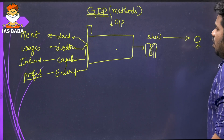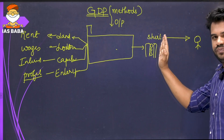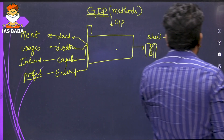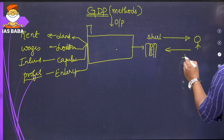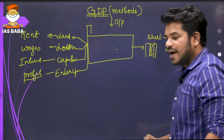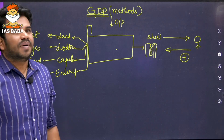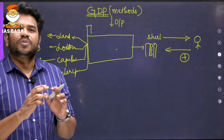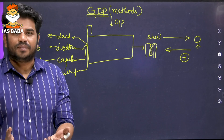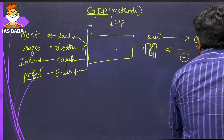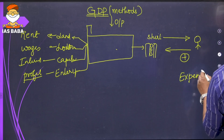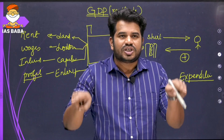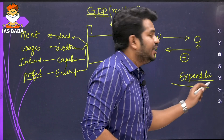We can calculate this output in three ways. One is by adding all the expenditure made by all the consumers. This consumer can be a government or a private person or a private firm. If I add the expenditure of all types of consumers in the domestic territory, I get GDP.